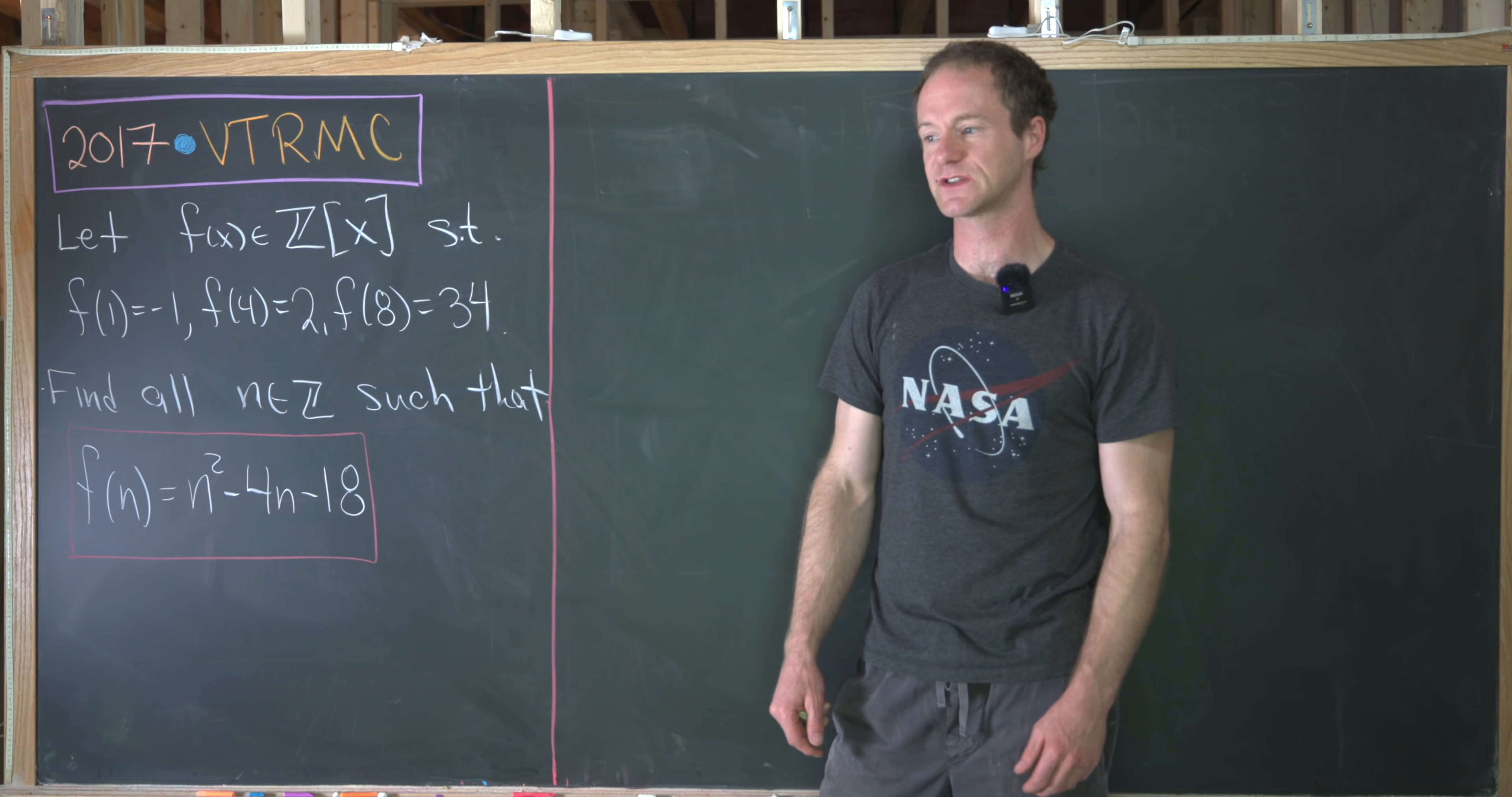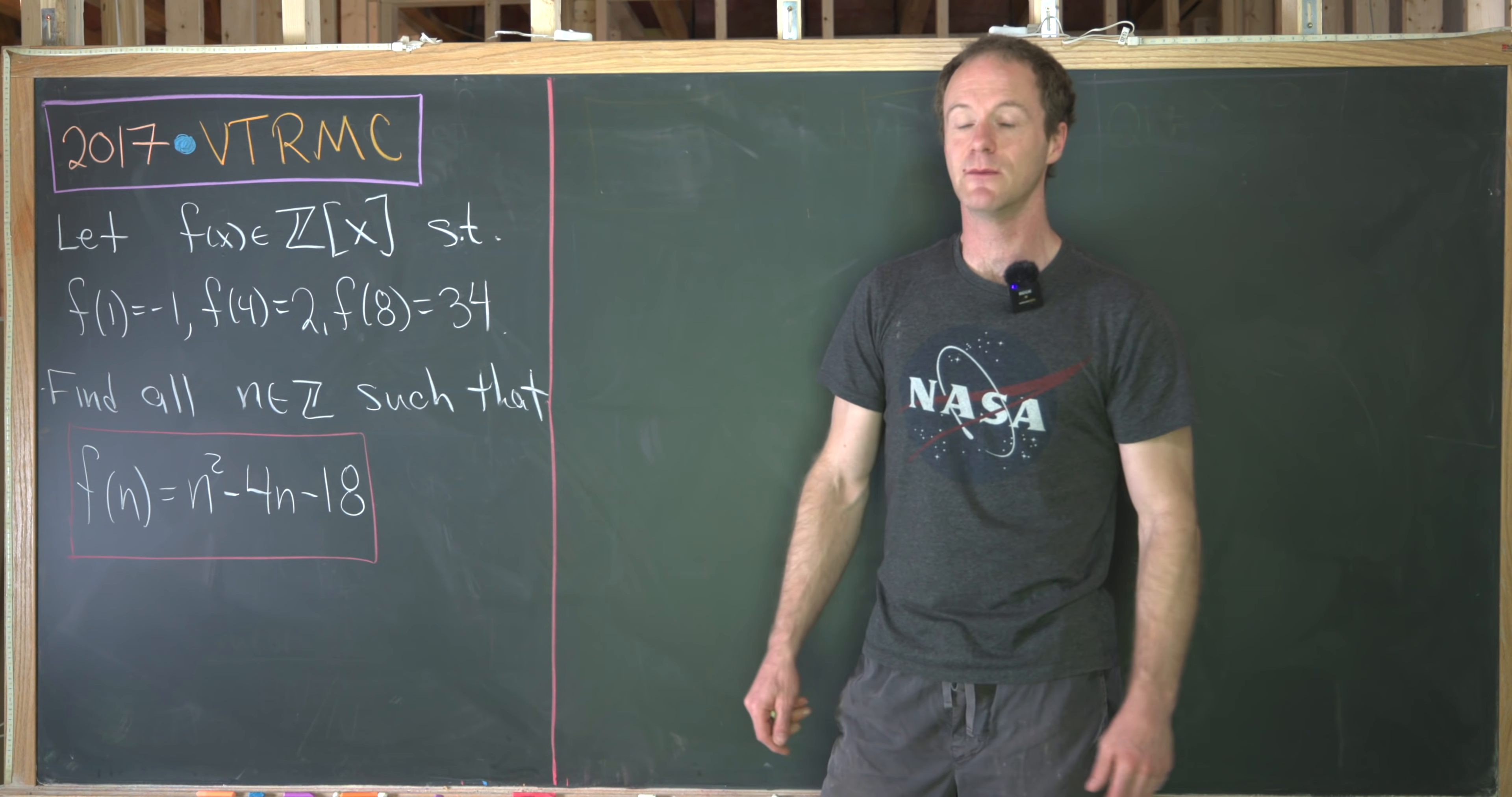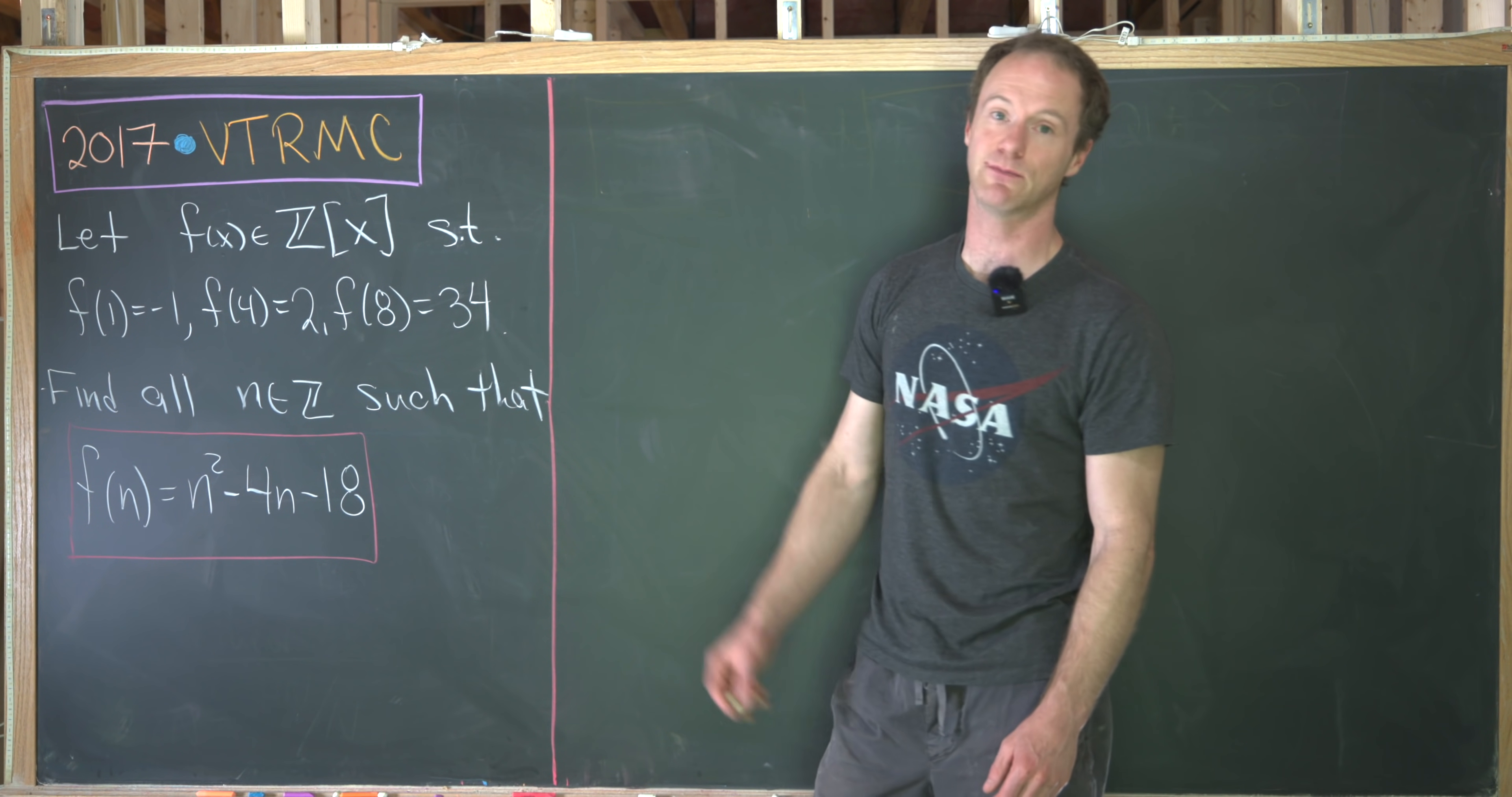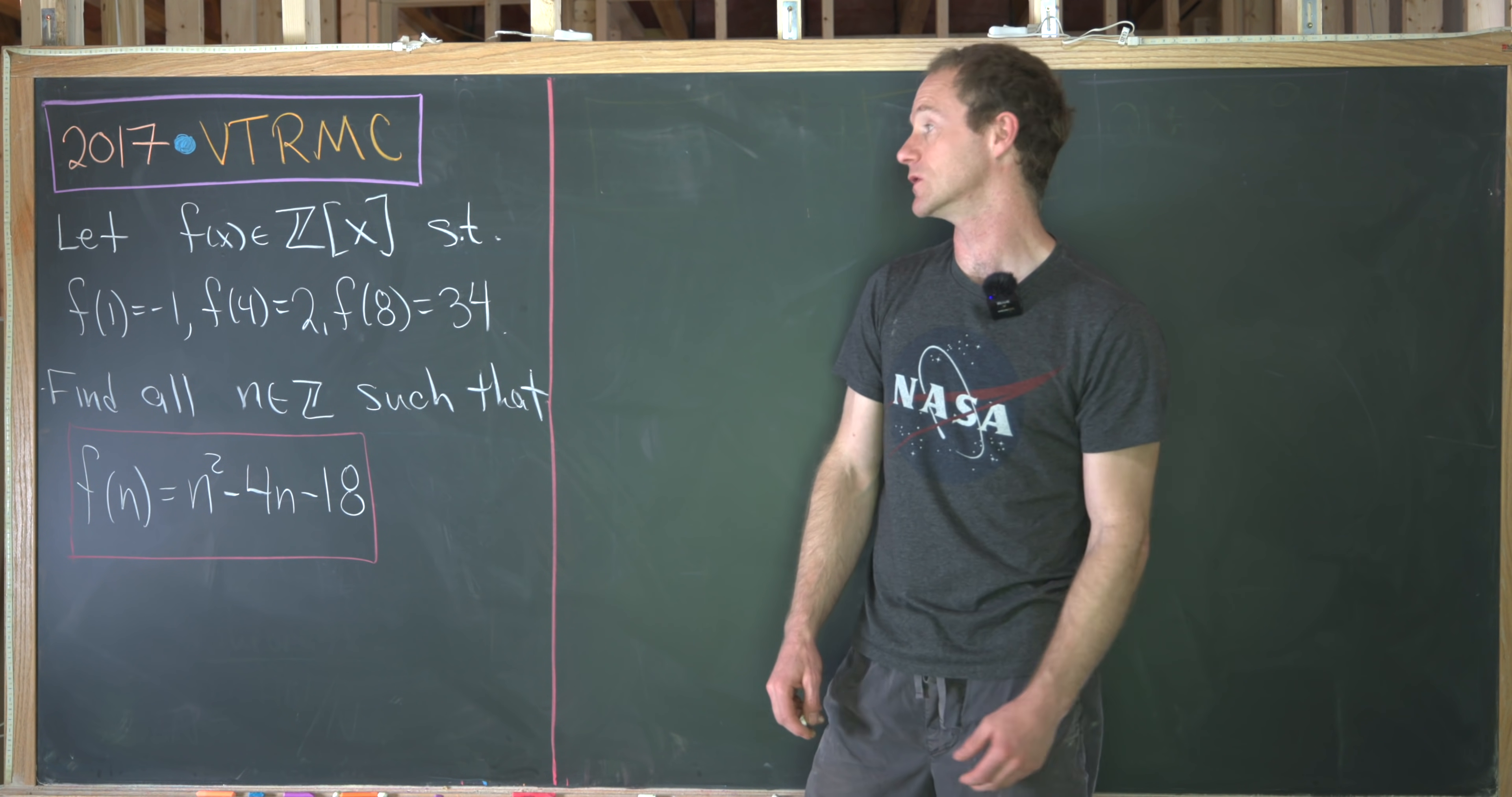Maybe the first thing to do is notice that we have three points on this polynomial. Three points don't determine any polynomial, but they determine a quadratic polynomial. So what we'll do is find a quadratic polynomial that shares these three points. In other words, that when we evaluate it at 1 we get negative 1, at 4 we get 2, and at 8 we get 34. We're guaranteed to have a quadratic polynomial that goes through those three points.